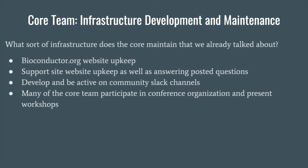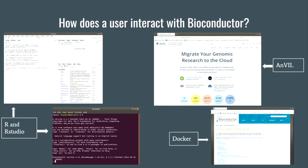Thinking about Bioconductor from a user's perspective: traditionally most users were using R Terminal or RStudio, which is still highly popular. But there are also newer technologies like Docker images or cloud-based initiatives like the Anvil project. For R Terminal and RStudio users, there's the CRAN package BiocManager, which is downloaded from CRAN and provides access to all packages in Bioconductor and CRAN repositories. The Anvil — which stands for Analysis, Visualization, and Informatics Lab Space — is an NHGRI project providing a secure cloud-based computing environment.